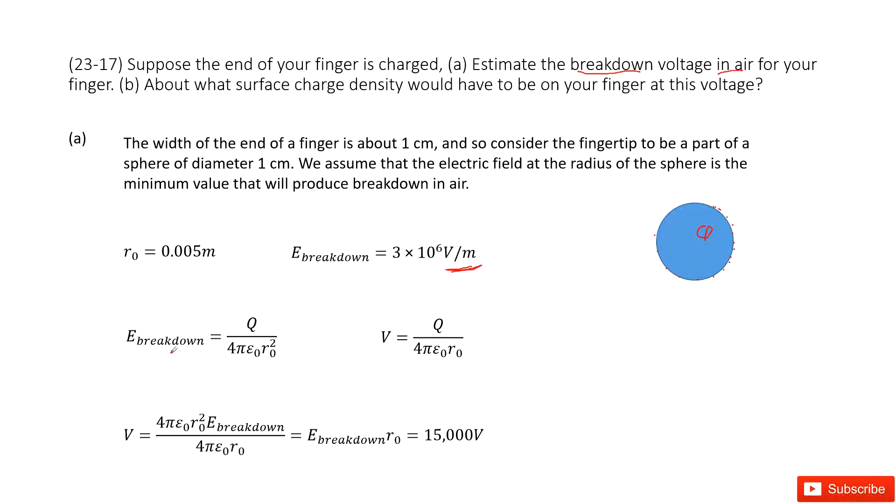So we can write down the electric field at this surface as Q divided by 4πε₀R₀ squared. R₀ is the radius for this object.